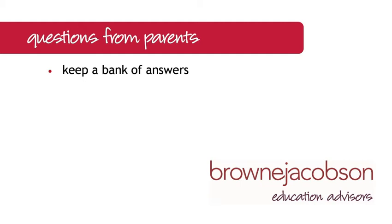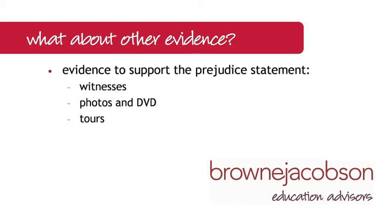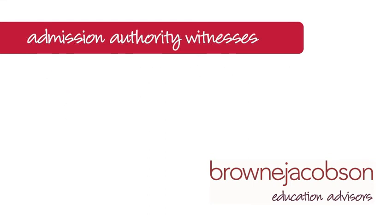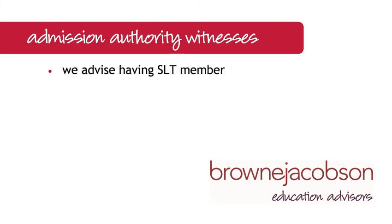Let's explore whether there is any opportunity to adduce other evidence at an appeal hearing. We will look at the prejudice statement in a separate training video, so here we focus on what can support it: witnesses, photos and DVDs, and a tour of the premises for panel members. The code talks about witnesses for the appellant only, and it is quite difficult to envisage a situation where the admission authority needs to rely on a witness. The admission authority's role is simply to state its case and rely on its prejudice statement. It is important to have a member of your senior leadership team supporting your presenting officer.